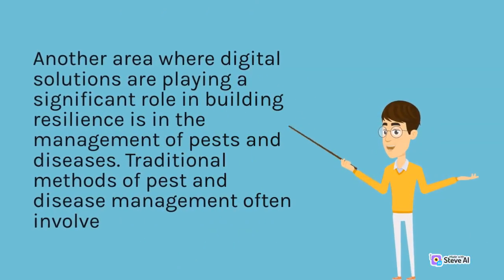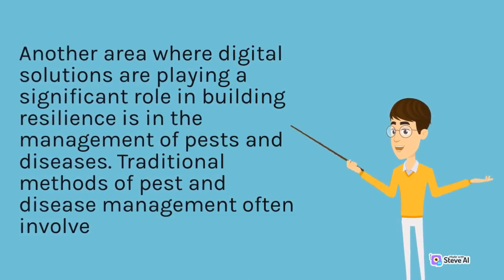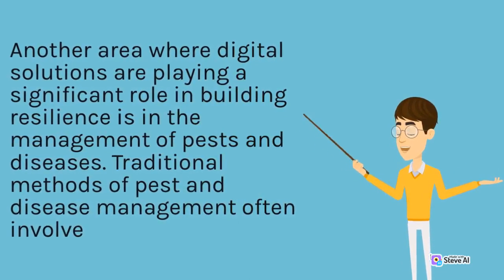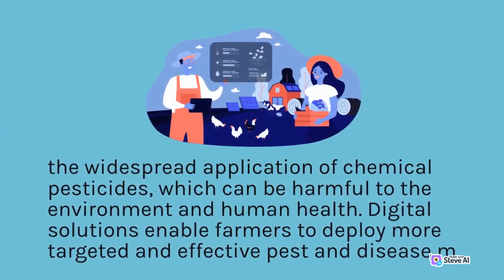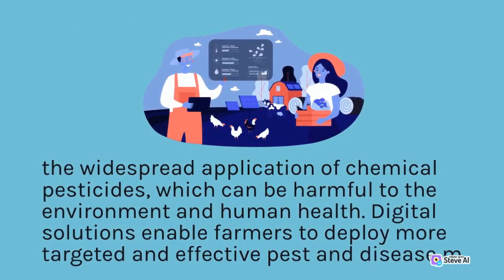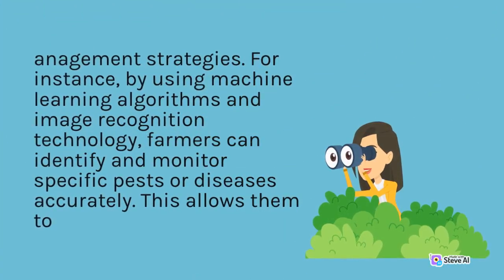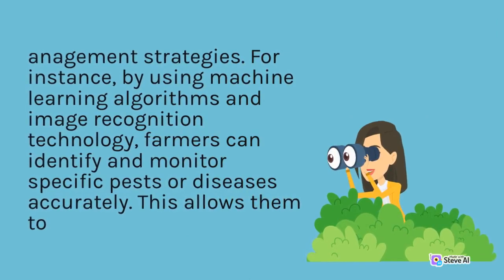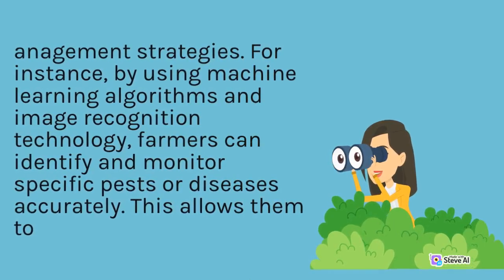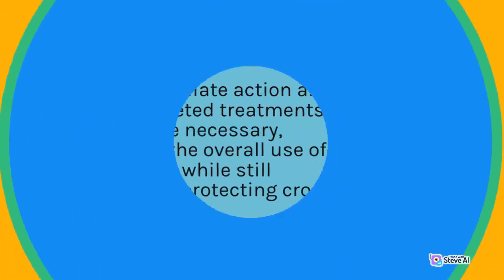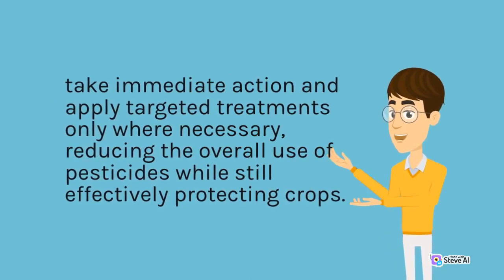Another area where digital solutions are playing a significant role in building resilience is in the management of pests and diseases. Traditional methods of pest and disease management often involve the widespread application of chemical pesticides, which can be harmful to the environment and human health. Digital solutions enable farmers to deploy more targeted and effective pest and disease management strategies. For instance, by using machine learning algorithms and image recognition technology, farmers can identify and monitor specific pests or diseases accurately. This allows them to take immediate action and apply targeted treatments only where necessary, reducing the overall use of pesticides while still effectively protecting crops.